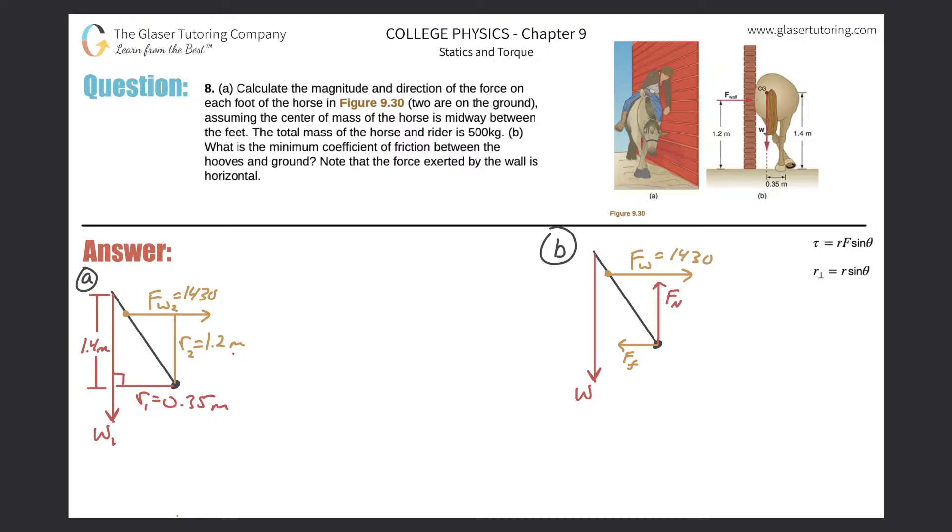Number eight, letter a: Calculate the magnitude and direction of the force on each foot of the horse, the two that are on the ground, assuming the center of mass of the horse is midway between the feet and the total mass of the horse and the rider is 500 kilograms. First, here's the picture, and they're assuming that the center of mass is located right in between the two feet.